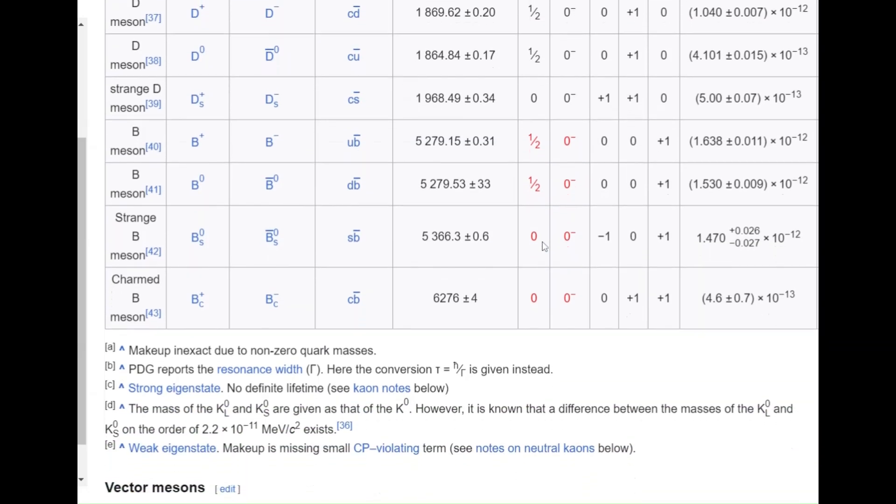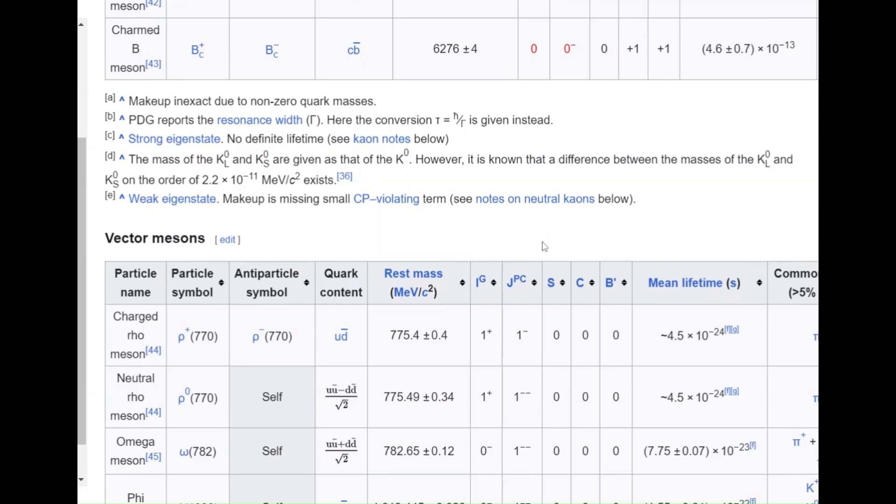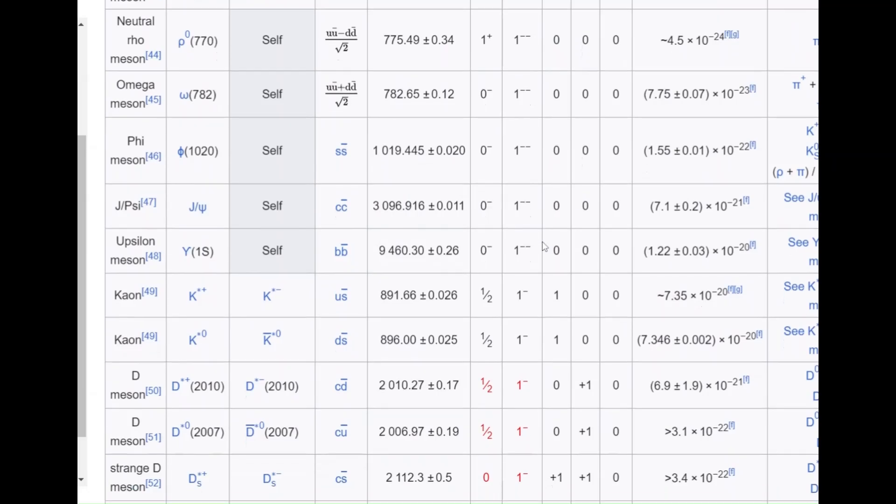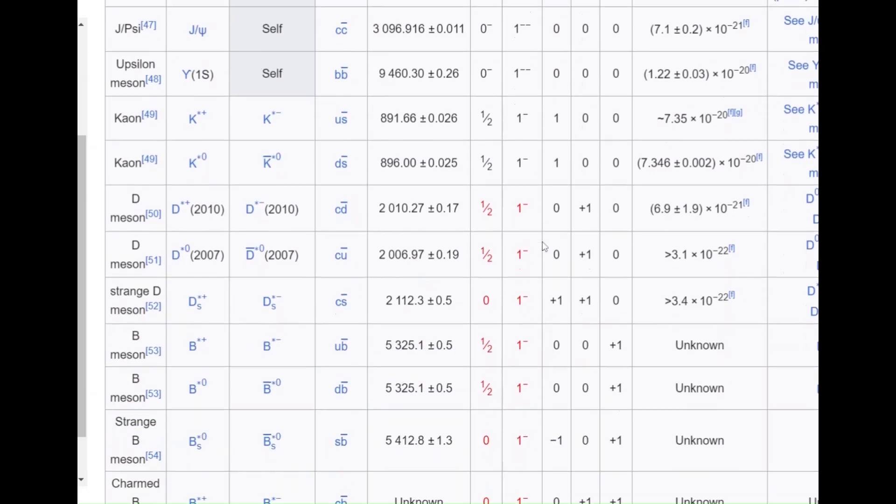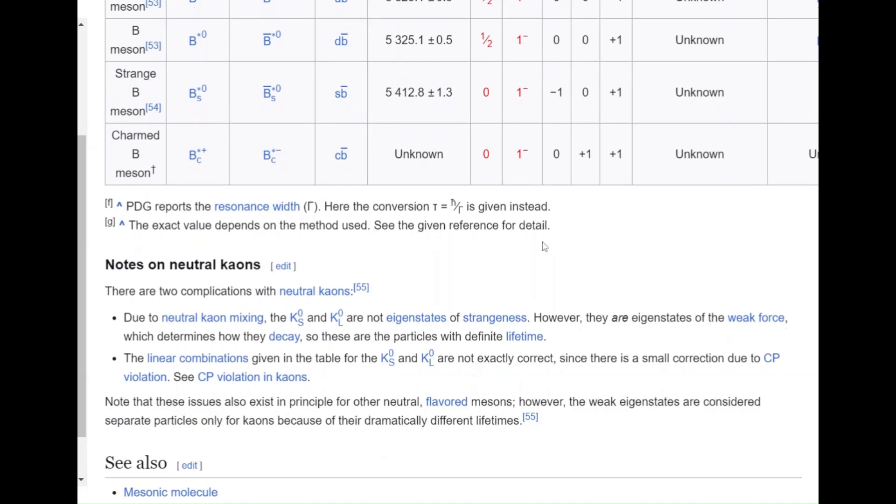And if the meson is made up of two different kinds of quark in the particle and anti-particle state, they tend to live much longer. But even then, the mean lifetime is about 10 to the power minus 8 seconds or so. And as you can see, as the mass increases,